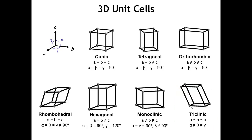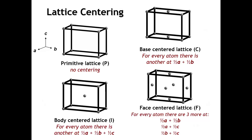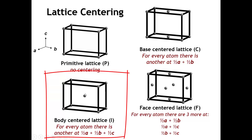So these are the three-dimensional primitive Bravais lattices. Now, just as in two dimensions, we could also have centered lattices, but in three dimensions there's more than one way to have a centered lattice. The most obvious way would be to put a lattice point at the center of the three-dimensional unit cell, and when we do that we get a body-centered lattice. The lattice point at the center of the unit cell has to be equivalent in every way to the lattice point at the vertex or corner of the unit cell.